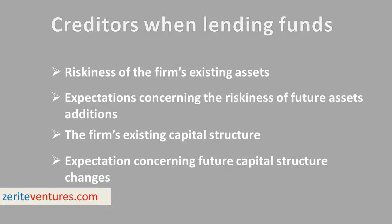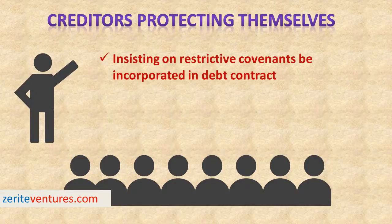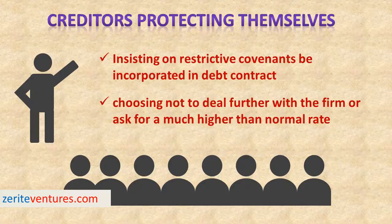Shareholders, through management, may make decisions which cause the firm's riskiness to change, affecting the value of debt. The firm may increase the level of debt to boost profits, which reduces the value of existing debt by increasing the firm's risk. Creditors will protect themselves through: insisting on restrictive covenants to be incorporated in debt contracts; and if creditors perceive that shareholders are trying to take advantage of them unethically, they may choose not to deal further with the firm or ask for a much higher than normal rate of interest to compensate for the risk of such possible exploitation.